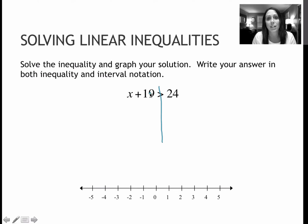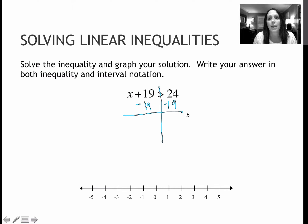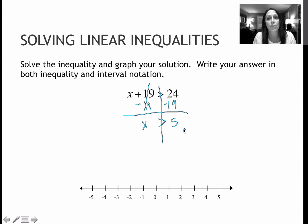Here I have x plus 19, so I have to do the opposite of that and subtract the 19 from each side. I'm not going to change anything about the way that I solve it. I still have an x on this side, 24 minus 19 is 5, and instead of an equal sign, I'm just going to keep that same greater than sign.